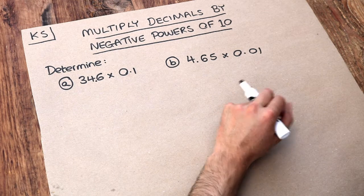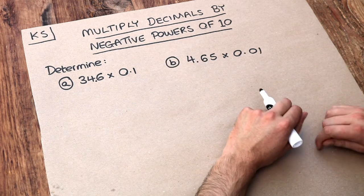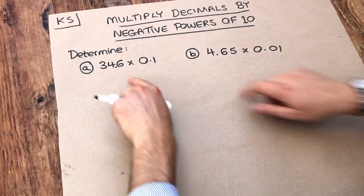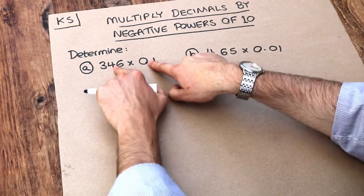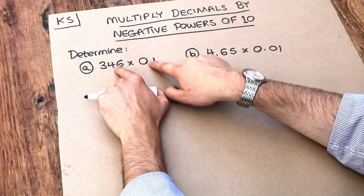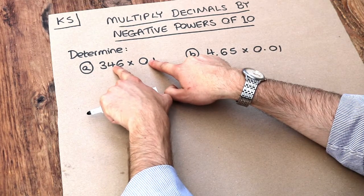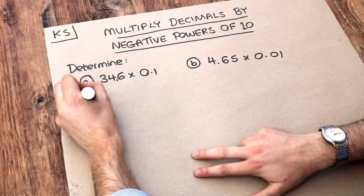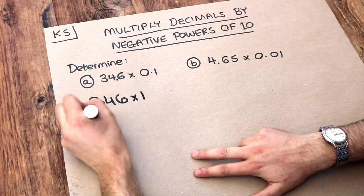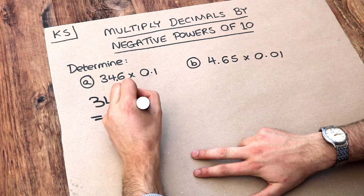Now in another video where I multiply just general decimal numbers together, what I always do first is just ignore the decimal points and just multiply whatever numbers I have there. So if I ignore those decimal points, I have 346 multiplied by 1. So 346 multiplied by 1 and that's clearly just 346.